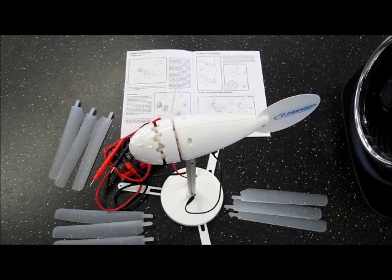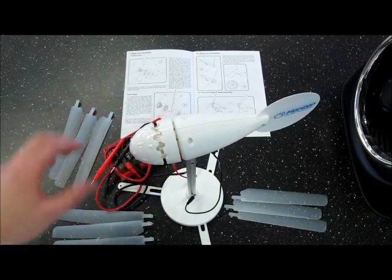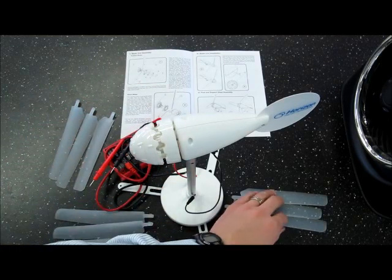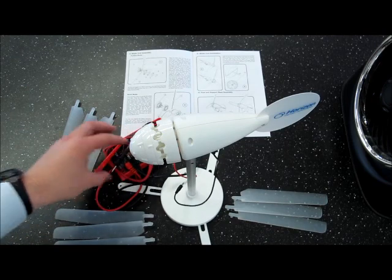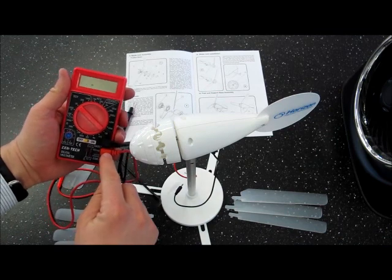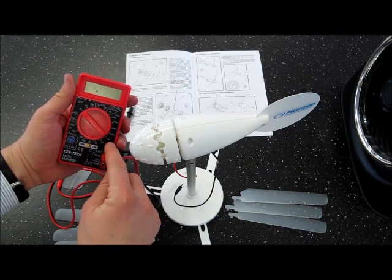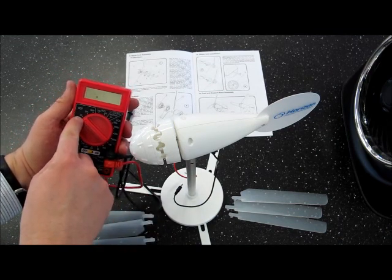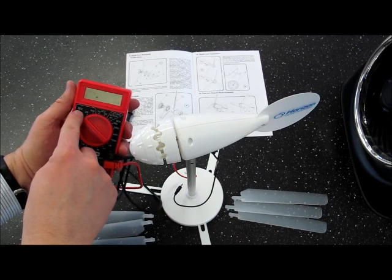When you first arrive at the station, you should find your wind turbine and three sets of blades along with your voltmeter. Make sure the voltmeter is set up to the proper setting with the red in the middle and the black at top, and the dial set to 20 DCV for direct current voltage.